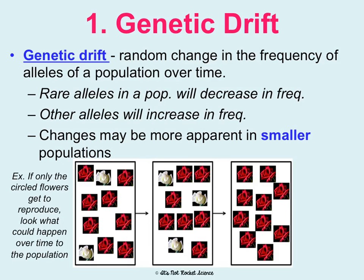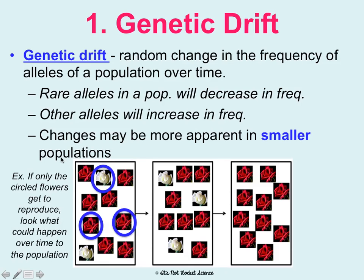If you're in my class, I'll do a little demonstration with a deck of cards to show you this effect, but we can also see it in this picture. If only the circled flowers randomly get to reproduce for whatever reason, look at what could happen over time. In the original population, 80% of the population is red flowers and 20% is white flowers. Let's say the red allele is dominant to white — so we don't know if these are heterozygous or homozygous dominant, but they're showing the dominant phenotype. Natural selection acts on phenotypes, and let's say some environmental things happen and only these three organisms are able to reproduce.